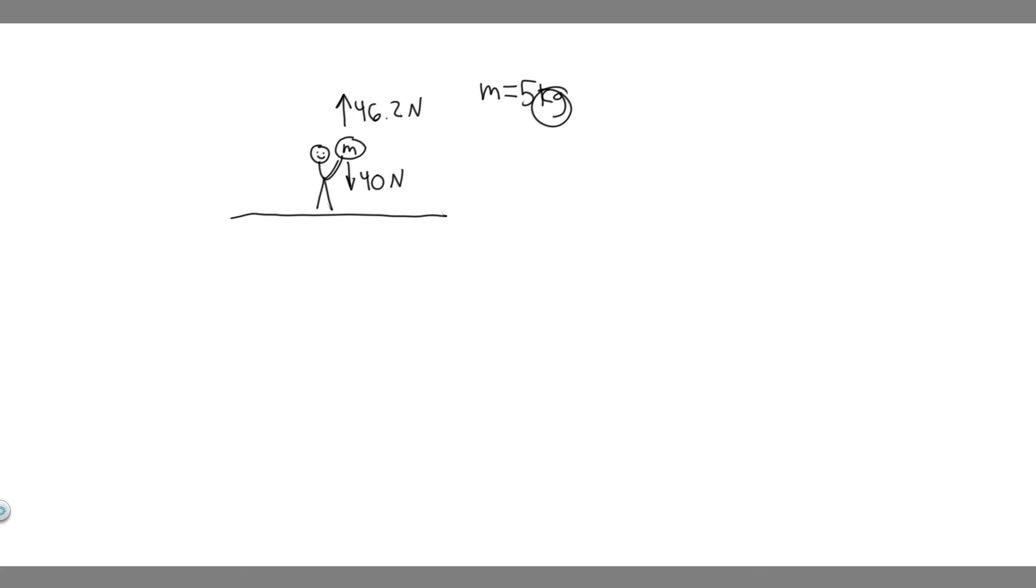And so what we're trying to do is solve for the acceleration. And the way we're going to do that is by using Newton's second law, which tells us that force is equal to mass times acceleration. So we have the mass of the rock, which is 5 kilograms, and we want to find acceleration. So the only thing we have left is force.